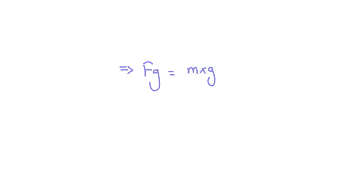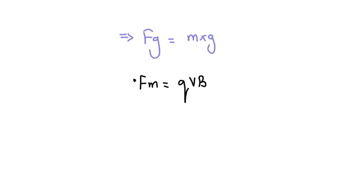The magnetic force exerted on the electron by magnetic field is given by Fm and that equals qvb, where q is the charge of the electron, v is the velocity of the electron, and b is the magnitude of the magnetic field.